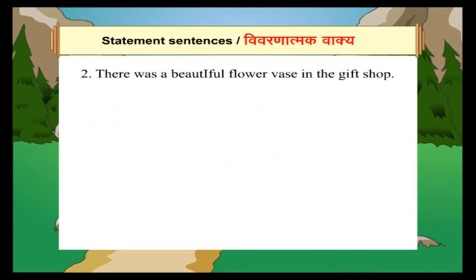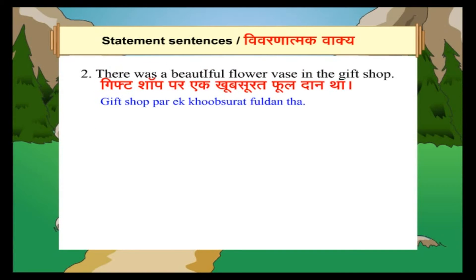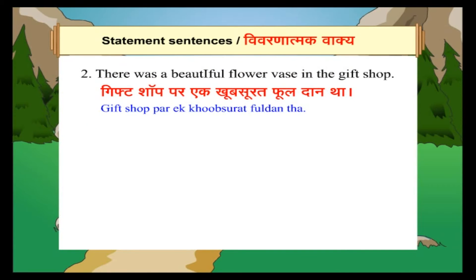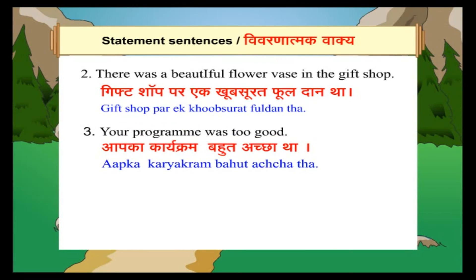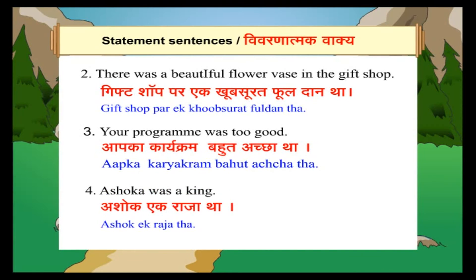There was a beautiful flower vase in the gift shop. (Gift shop पर एक खूबसूरत फूलदान था.) Your program was too good. (आपका कार्यक्रम बहुत अच्छा था.) Ashoka was a king. (Ashok एक राजा था.)